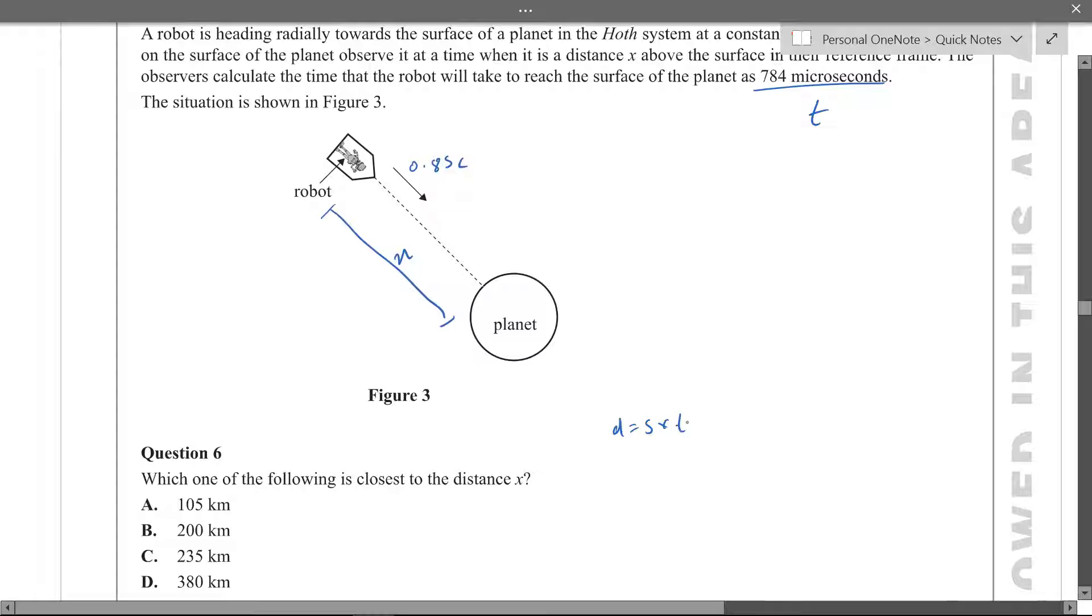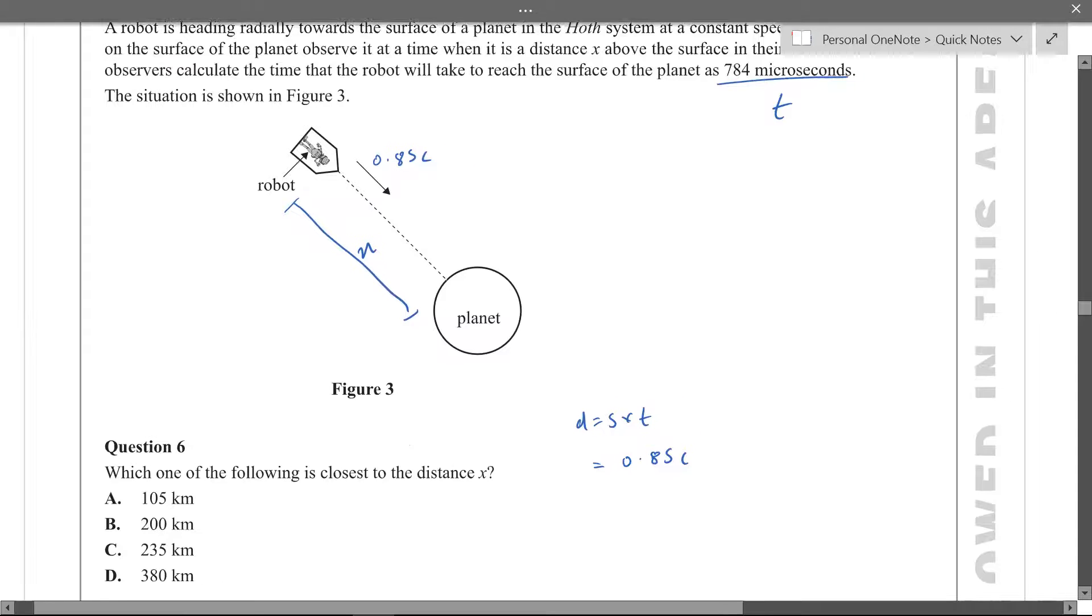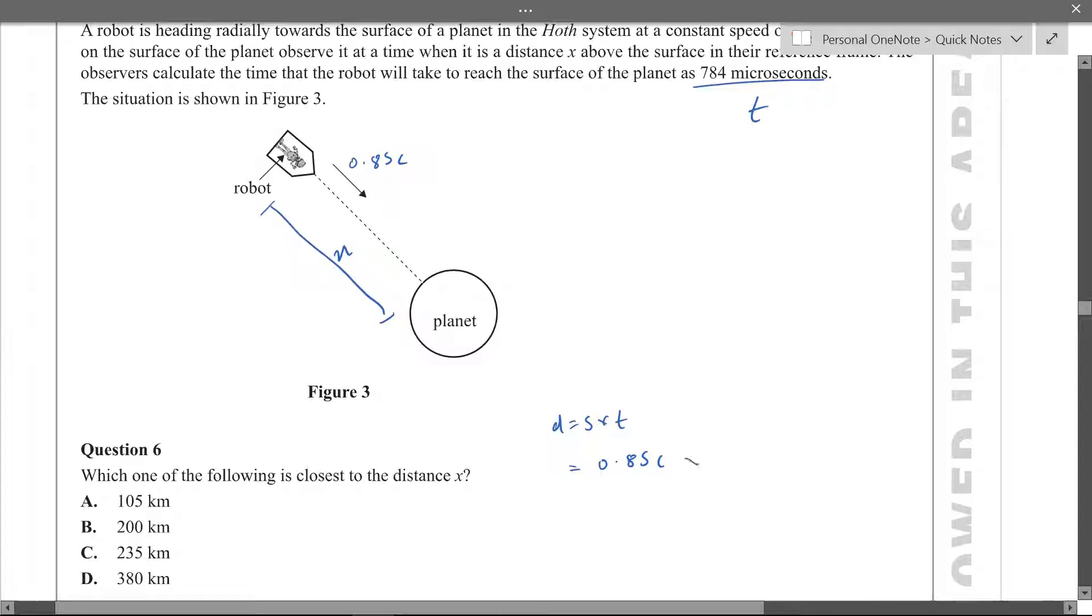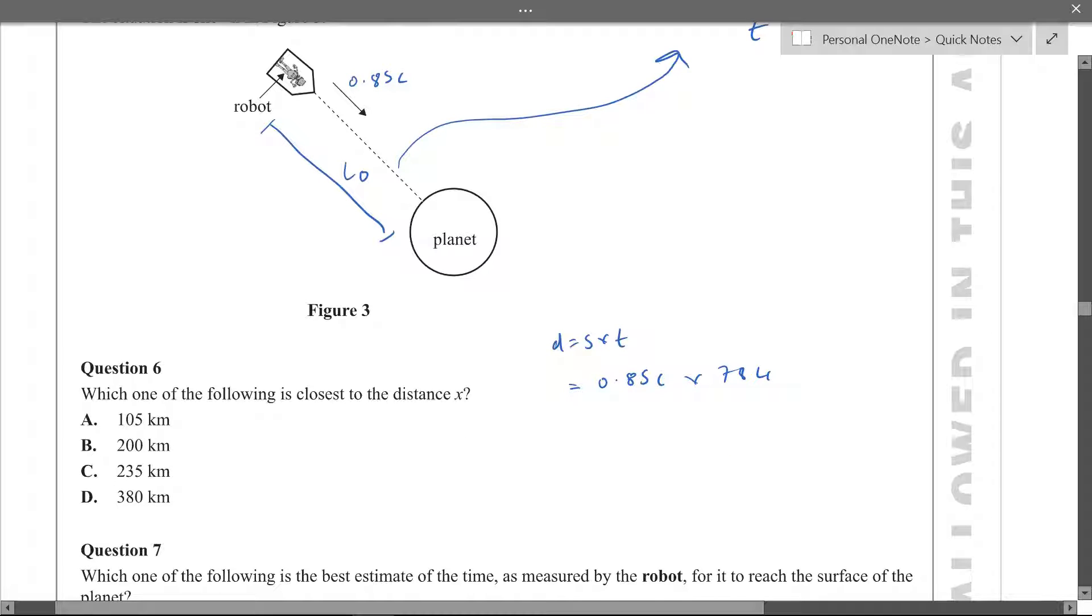Distance x equals speed times time. Speed we know 0.85c, 85 times 784. Okay so this is L0 because it's proper time, I mean proper length, but this is measured by the observers, not the robot. So that's why we use those two together, 10 to the negative 6 and if you do that you just get b.